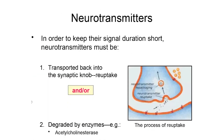That process is known as synaptic transmission, and it is completed through the use of neurotransmitters — chemicals stored in the synaptic knob. Once an action potential reaches the synaptic knob, those neurotransmitters are released. They move across the synapse, the gap between the synaptic knob and the next neuron, and bind to the next neuron in the pathway, potentially causing it to generate its own electrical signal or action potential.